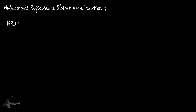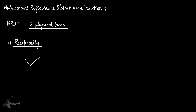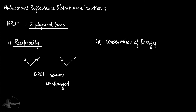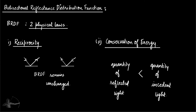BRDF is based on two physical laws. One is reciprocity, which means if the incoming direction and the outgoing direction are swapped, the BRDF remains unchanged. The other law is conservation of energy, which means the quantity of reflected light must be less than the quantity of incident light. If it becomes higher, the surface becomes an emitting surface instead of a reflecting surface.